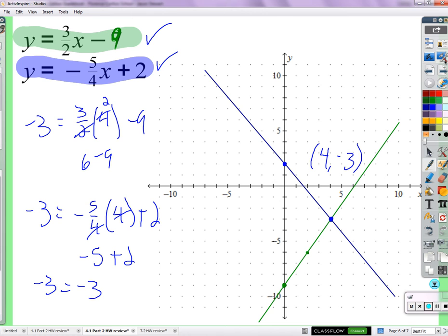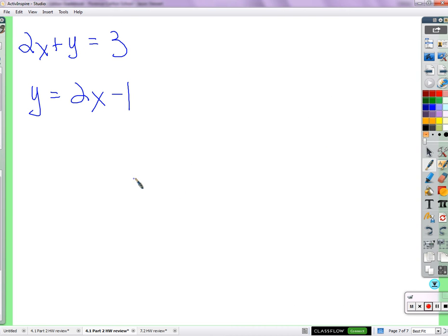But it did help us see a couple of things. These systems are going to have one solution, zero solutions, or how many solutions? Infinity. Infinity solutions. So we at least got to see that. If you remember back to the first day I asked you, do you think this system has more than one solution? A lot of people thought it did. And the graph helped us. All right. Enough of all that.